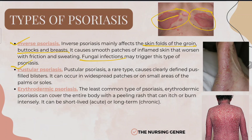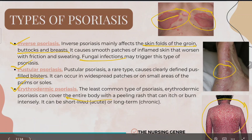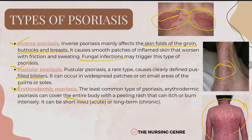Pustular psoriasis is a rare type causing clearly defined, pus-filled blisters. It can occur in widespread patches or in small areas such as the palms and soles. Erythrodermic psoriasis is the least common type and can cover the entire body with a peeling rash that can burn intensely. It can be either acute or chronic.